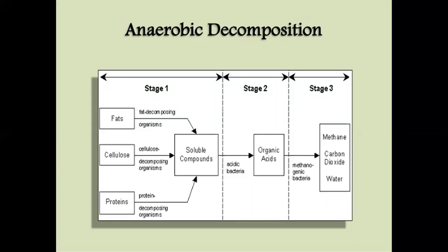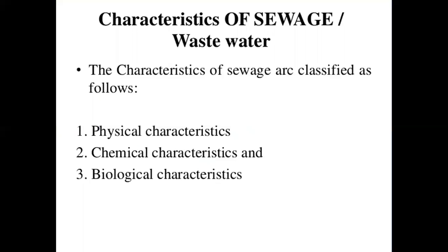Anaerobic decomposition occurs in three stages. Stage one involves fats, cellulose, and proteins being converted into soluble compounds. Stage two involves acid bacteria converting organic acids for further transfer. Stage three involves methanogenic bacteria, which produce methane, carbon dioxide, and water. The characteristics of sewage or wastewater are basically three types: first, physical characteristics; second, chemical characteristics; third, biological characteristics.